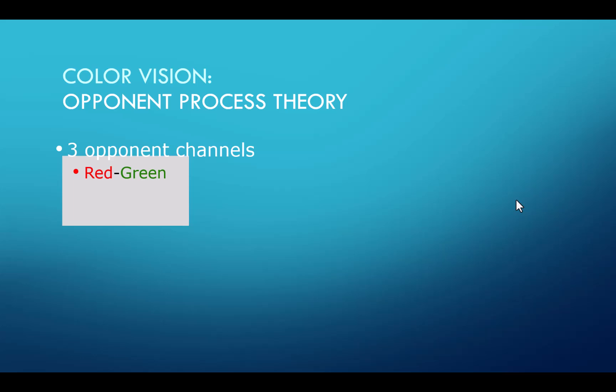The first one is red-green. The second is blue-yellow. And the third is black and white. So the idea is if a cell is inhibited by a color, meaning it isn't firing an action potential, then when that color is removed, it results in a burst of activity.